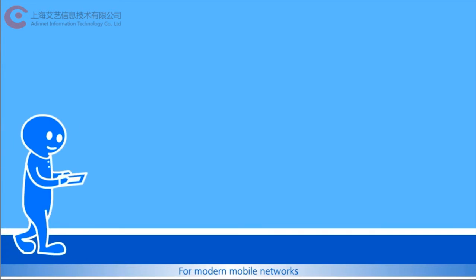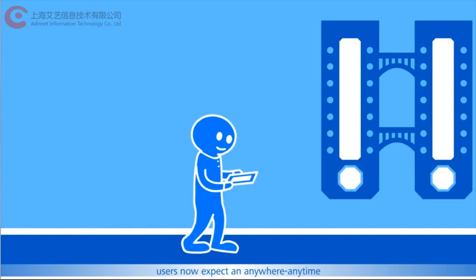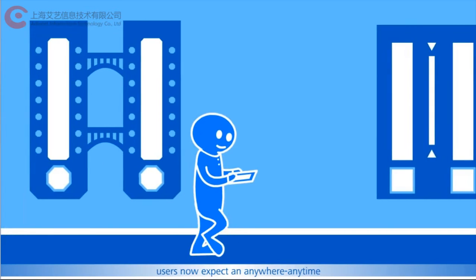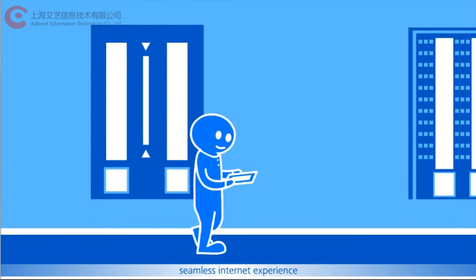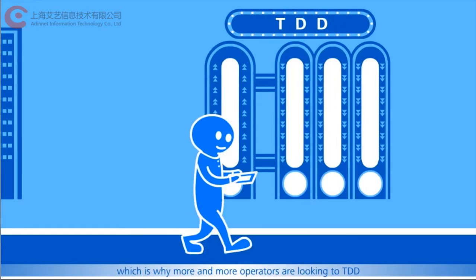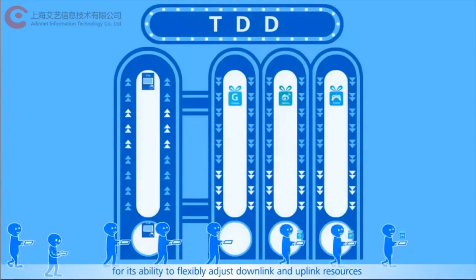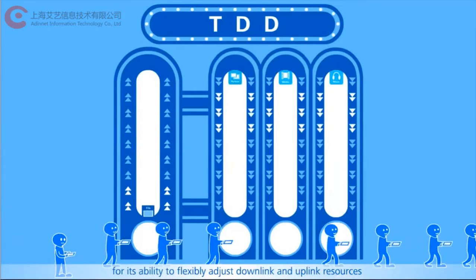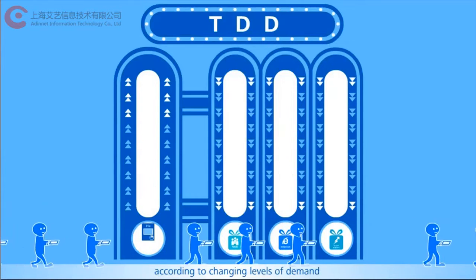For modern mobile networks, users now expect an anywhere, anytime, seamless internet experience, which is why more and more operators are looking to TDD for its ability to flexibly adjust downlink and uplink resources according to changing levels of demand.